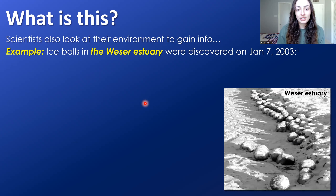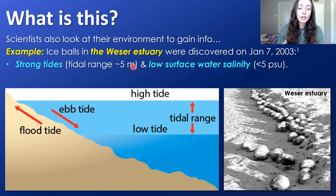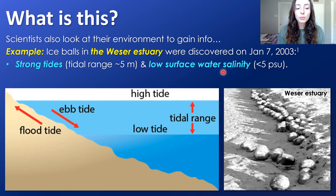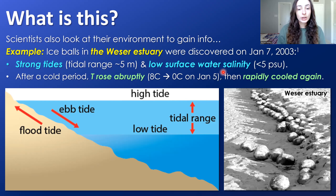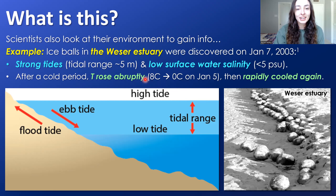In this Weser estuary, these ice balls were observed on January 7, 2003. The environment shows strong tidal influence — the tidal range on that beach is around five meters between low and high tide. There's really low surface water salinity, which is more conducive to ice ball formation because they don't incorporate salt. Records leading up to January 7 show that after a cold period, temperature rose abruptly on the 5th of January from around negative 8 degrees Celsius to around 0 degrees Celsius.